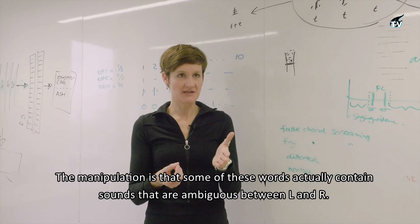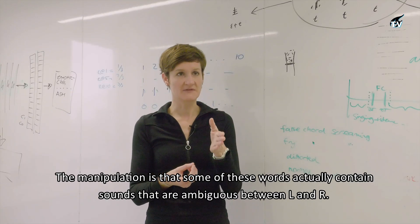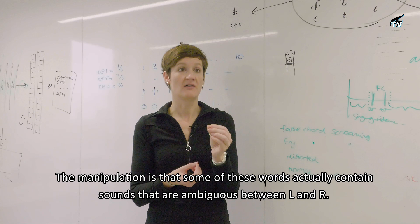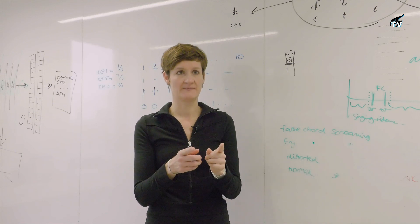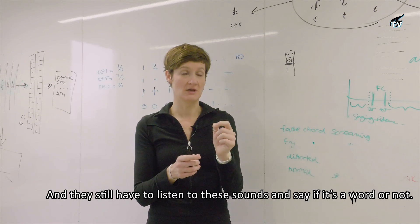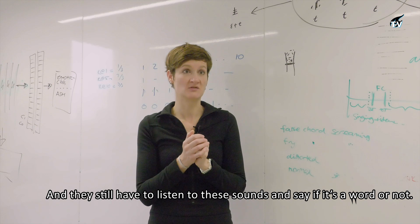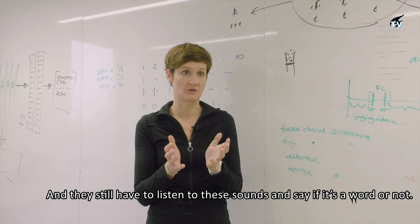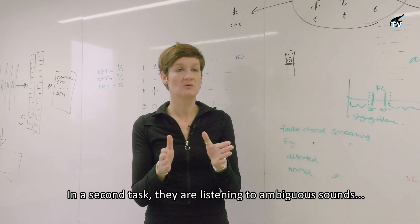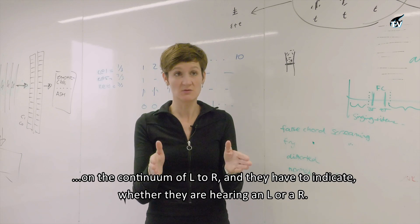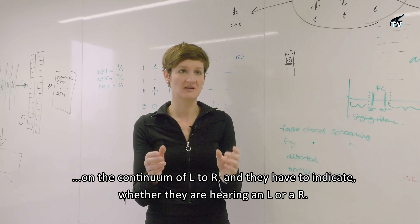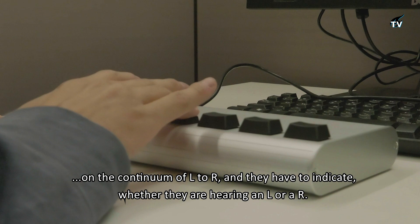The manipulation is that some of these words actually contain sounds that are ambiguous between L and R, and participants still have to listen to these sounds and say whether it is a word or not. In a second task, they listen to ambiguous sounds on the continuum from L to R and have to indicate whether they are hearing an L or an R.